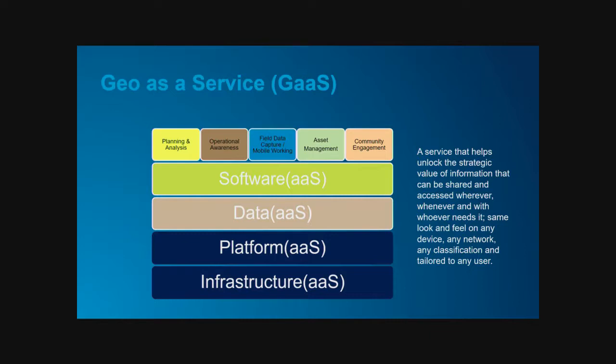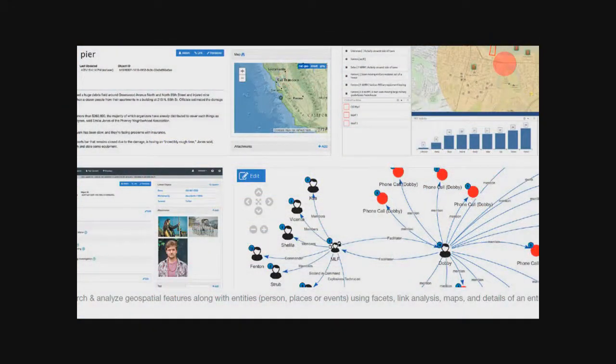That was a bit of a whistle-stop tour, but the key message is: a GIS — geographic information system — don't think what it was 50 years ago. It's geographic, it's geospatial, and it's geotemporal. Anything with a date-time stamp, you can start to exploit. You can unlock the strategic value of information, and any person, any device, any classification can have the same look, feel and functionality. It is a decision-making tool. Now I'd like to hand over to Mark, who will walk you through some really good examples.